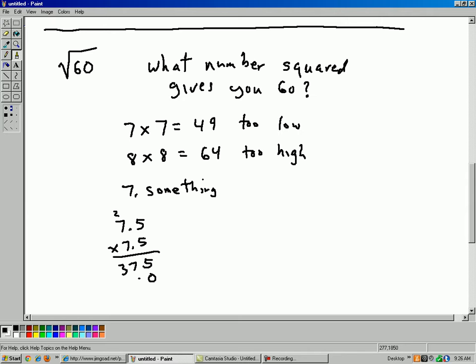7 times 7 is 49, plus 3 is 52. So 5, 12, carry the 1, 6. So 7.5 times 7.5 is 56.25. So that's still too low, although it's closer.